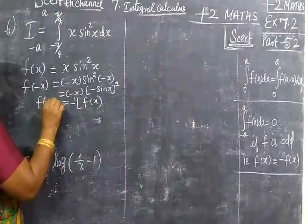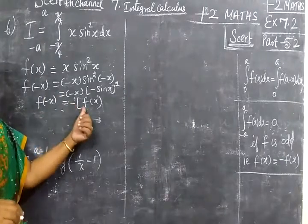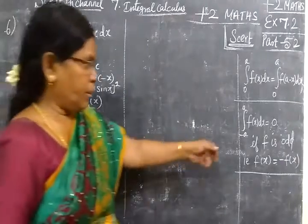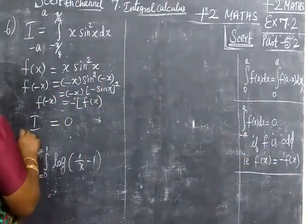So f of minus x. The answer you are getting is minus of f(x), which implies the answer is 0. That means i equals 0.